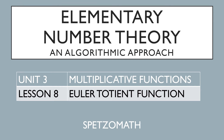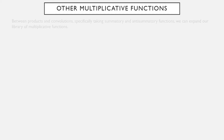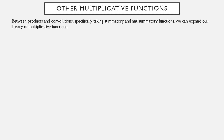We're now going to take a look at a rather interesting function called the Euler-Totient function. We've seen that if we have two functions that are multiplicative, their product is multiplicative and their convolution is multiplicative. Specifically, summatory and anti-summatory functions of multiplicative functions are also multiplicative. So we can expand our library of multiplicative functions using these tricks.